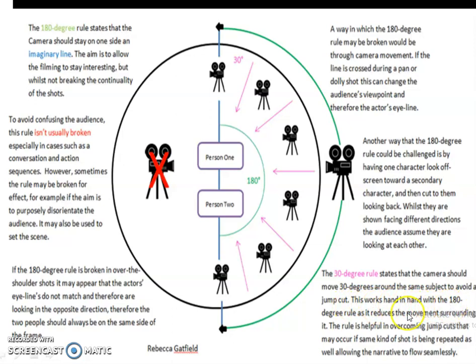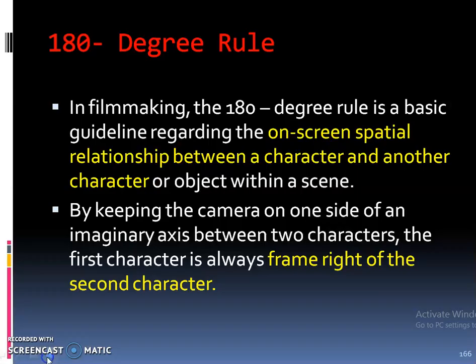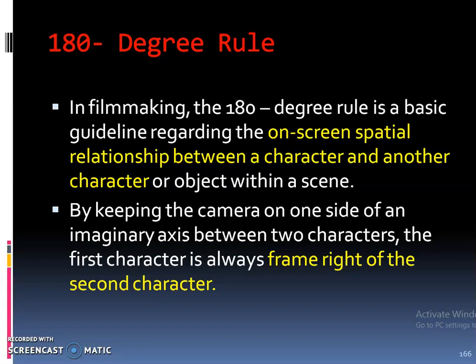Next we are going to see the 180 degree rule. In filmmaking, the 180 degree rule is a basic guideline regarding the on-screen spatial relationship between a character and another character or object within a scene. When you film a scene using separate shots, it is important that people understand where everything in the scene is. You can use the 180 degree rule together with looking space and the eye line match to help them.